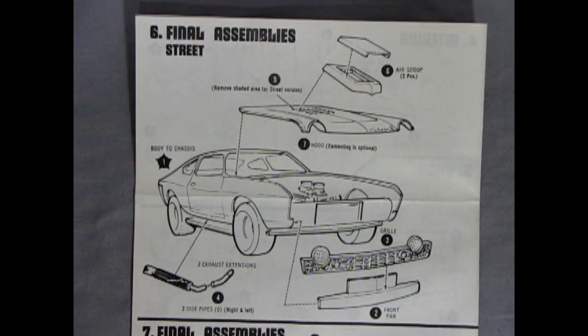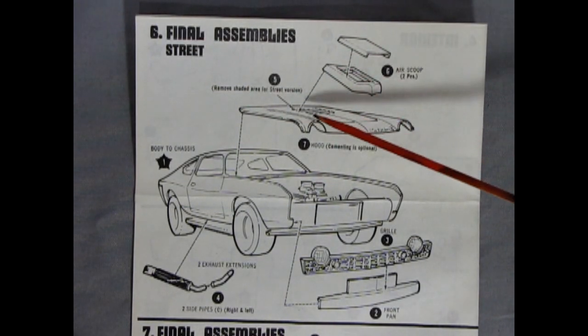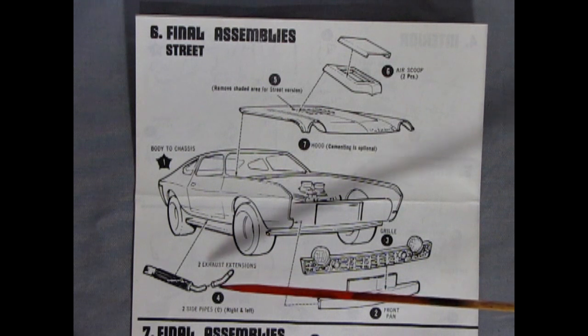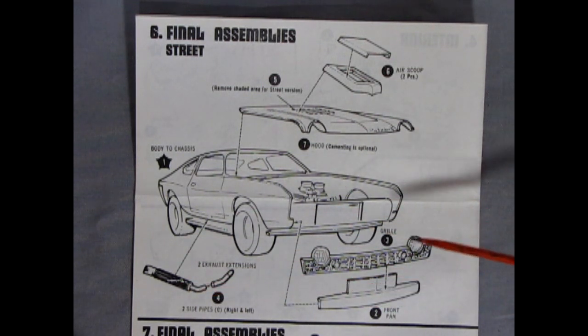Panel six shows the final assemblies for our street rod. And it does say to cut out the hole in the bottom of the hood and then add in this really cool two-piece air scoop. Then we have our side exhausts and then our grille and a front pan will pop in underneath.